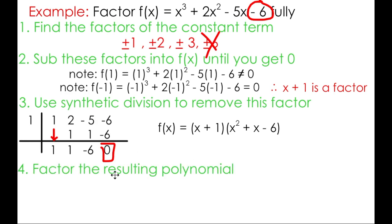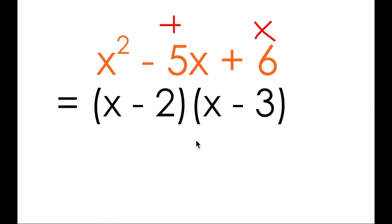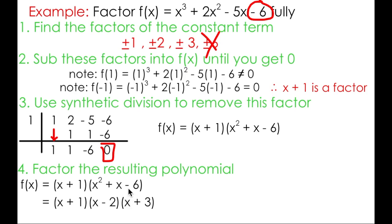The last thing we need to do is factor the resulting polynomial. I got x squared plus x minus 6 when I used synthetic division, but as it turns out, that is factorable. I can use the same process from the beginning of this video to find two numbers that add to get 1 while also multiplying to get negative 6. As it turns out, those numbers are negative 2 and positive 3, which takes me to the fully factored form of my cubic.